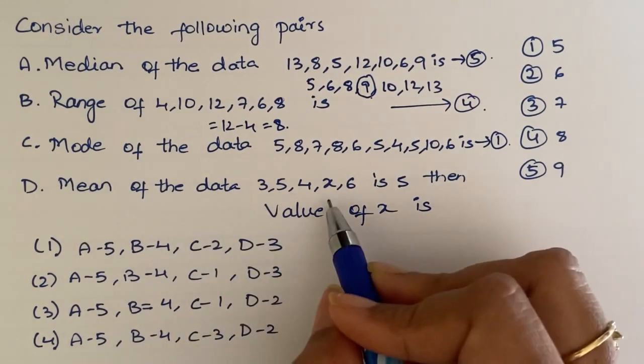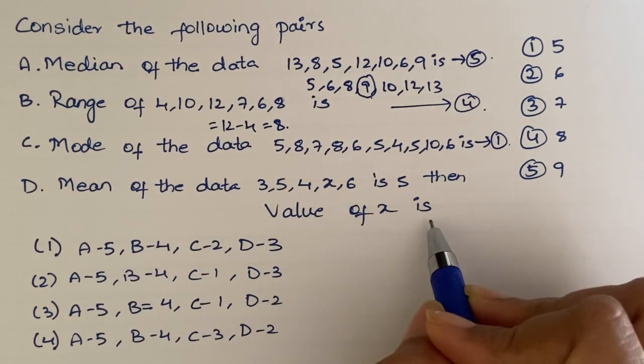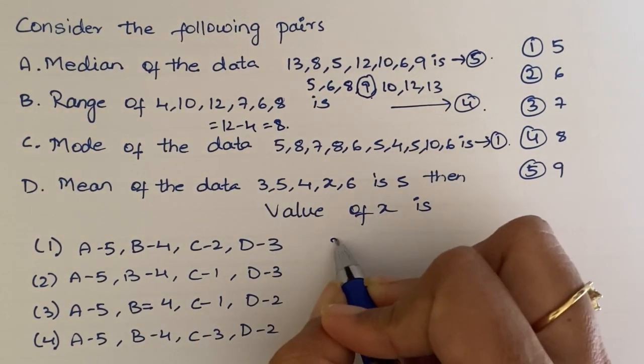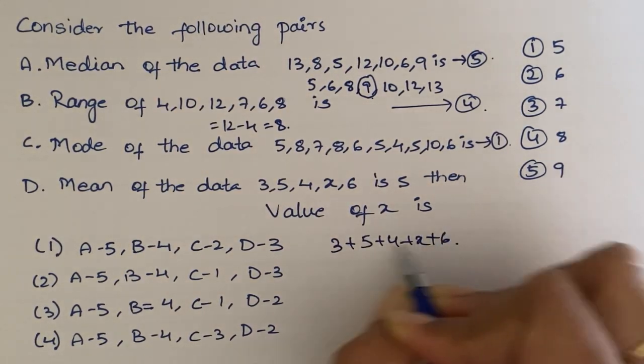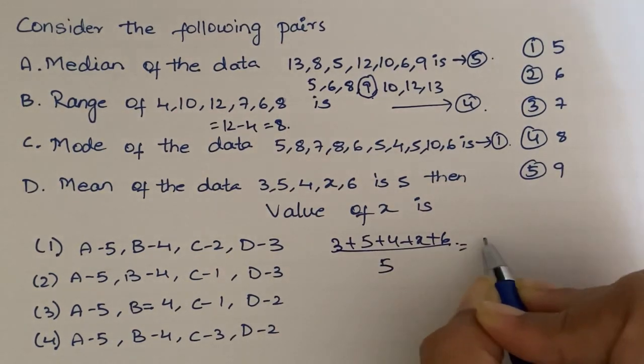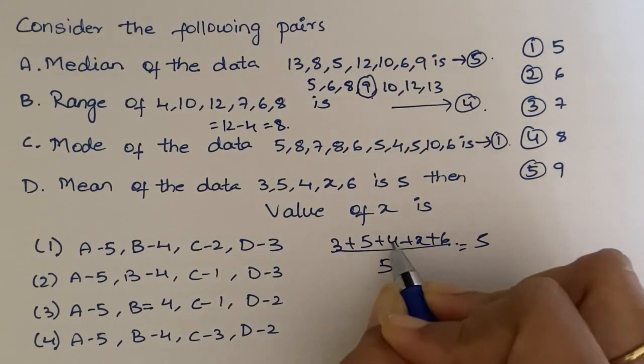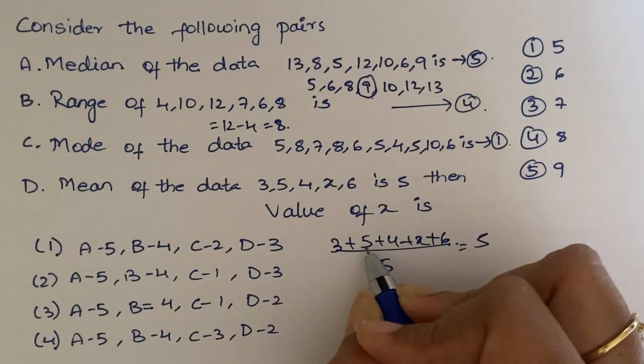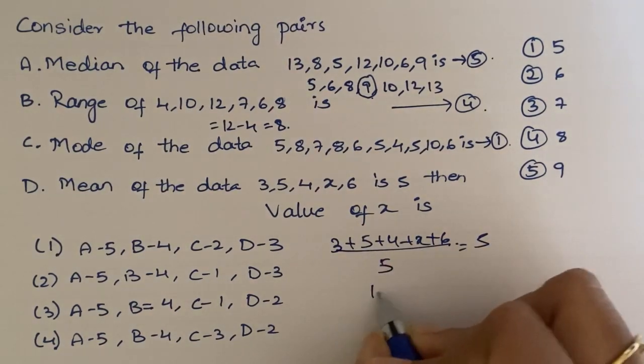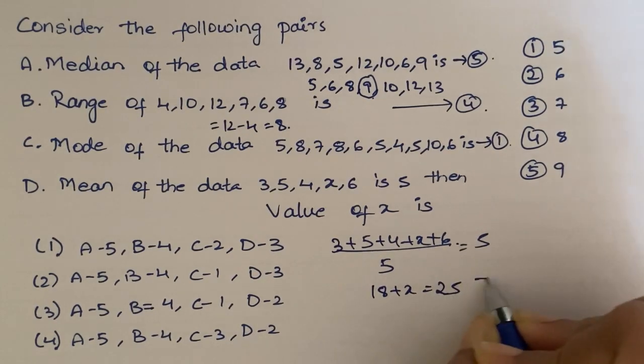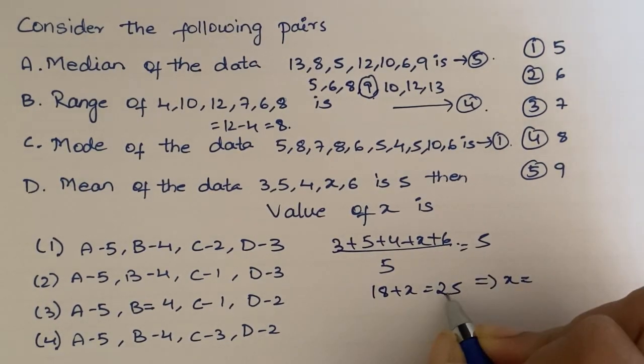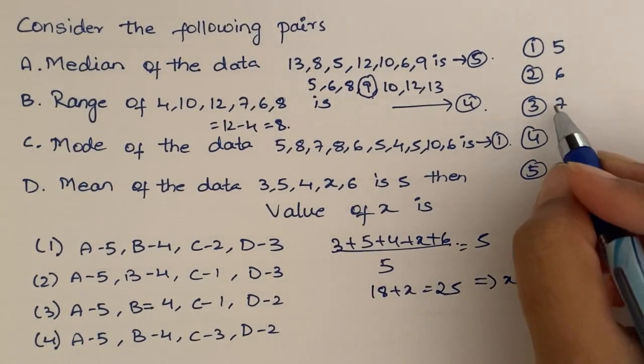Next. Mean of the data is 5. Then value of x. So, mean formula is sum of the observations by total number of observations. 5 is equal to - if I add them 6 plus 4 is 10, 10 plus 5 is 15, 15 plus 3 is 18. 18 plus x is equal to 5 times 5, which is 25. Which implies x is equal to 25 minus 18. That is 7.